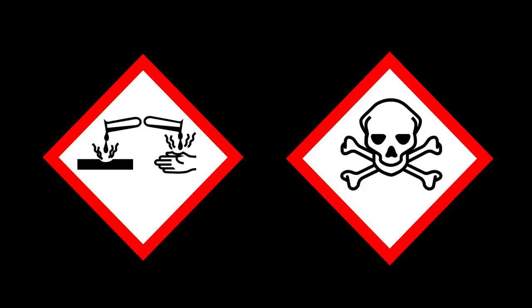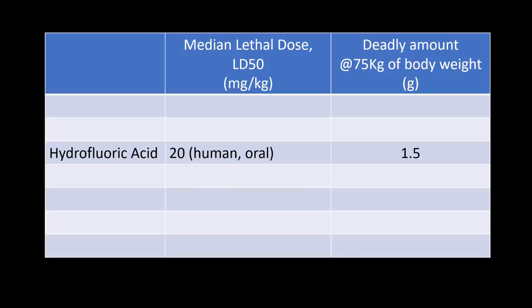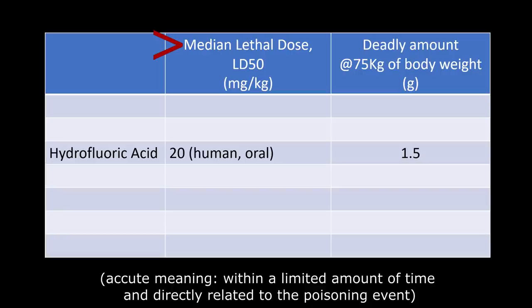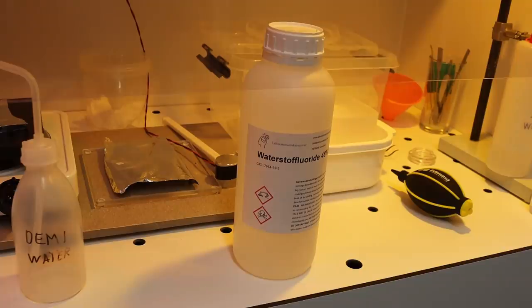One of the things about HF is that it is not just an acid, but also a poison. And if we look at the median lethal dose, which is the amount of substance that will lead to acute death in 50% of the cases, the value is 20 mg per kilogram of body weight. So for an average person of around 75 kilos, this is equivalent to about 1.5 grams, which really isn't that much.